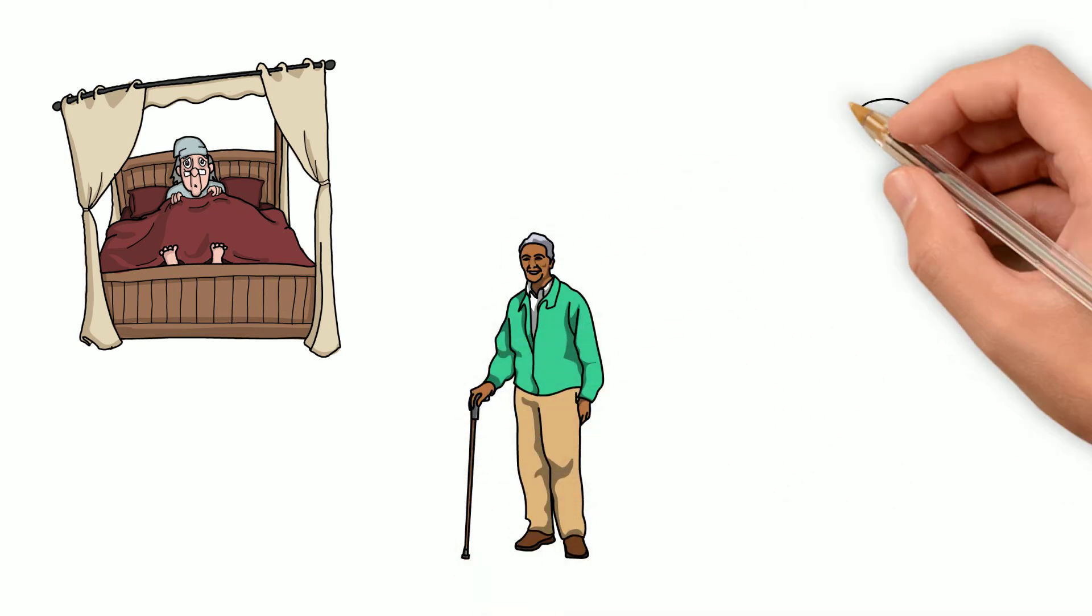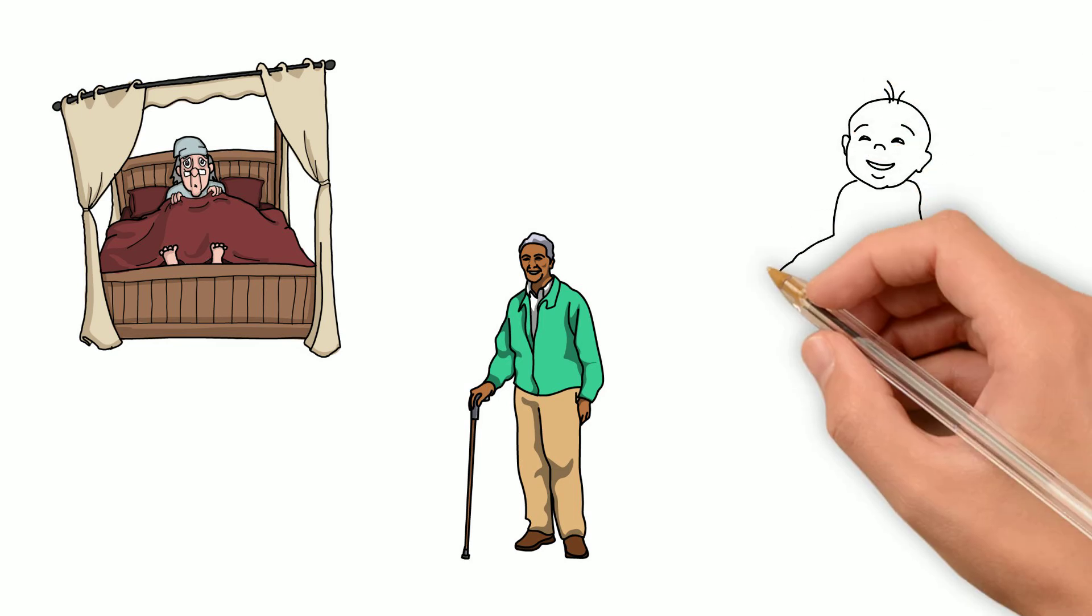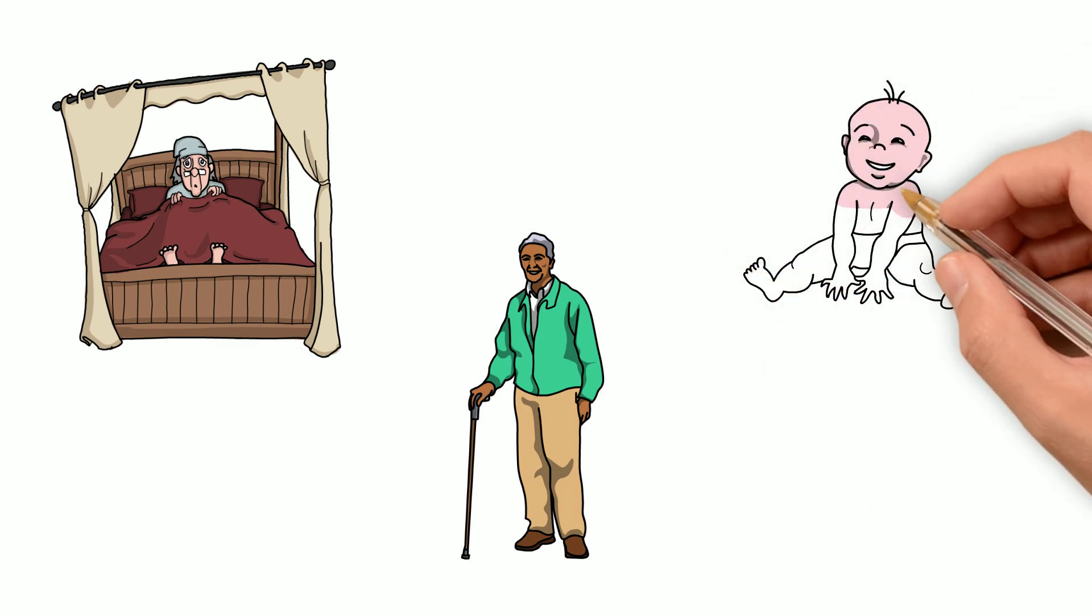Certain groups of people, such as those who have certain immune illnesses, the elderly, and young children, are unable to be vaccinated because their immune systems are so weak that they can become severely ill from the weakened pathogens present in some vaccines.